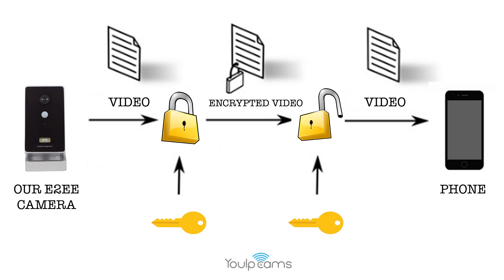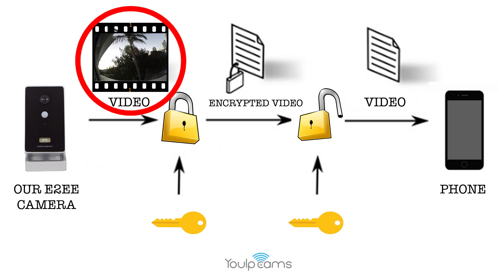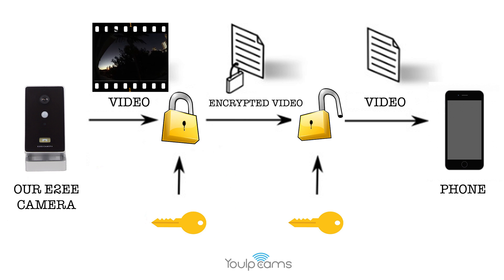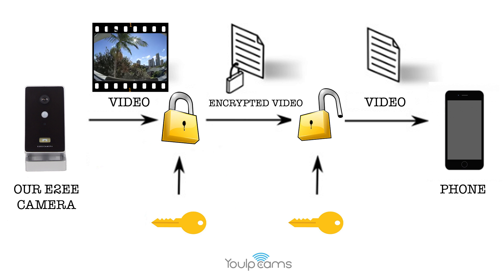Most cloud camera services store video history recordings on their servers as plain video data, so anybody could see the video if the server is hacked. That plain data video captured from a camera is only protected by a password at login, but the data itself is not encrypted. This image can be intercepted while traveling through the internet to a mobile phone, going directly into the hands of who you don't want to have it.